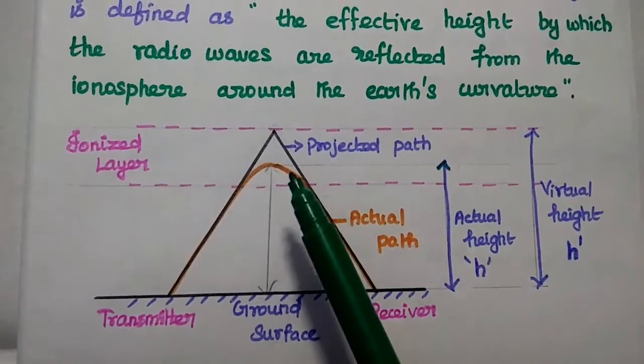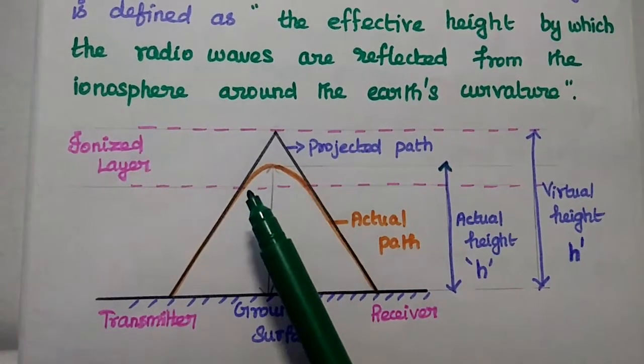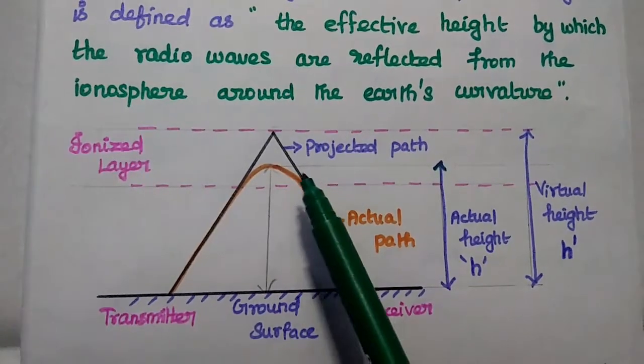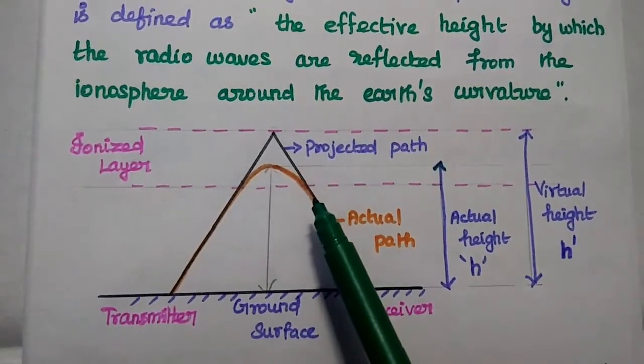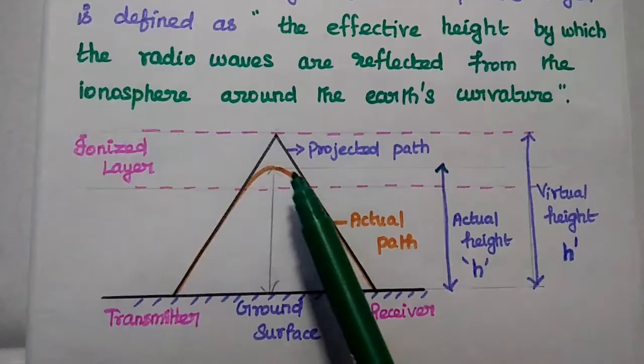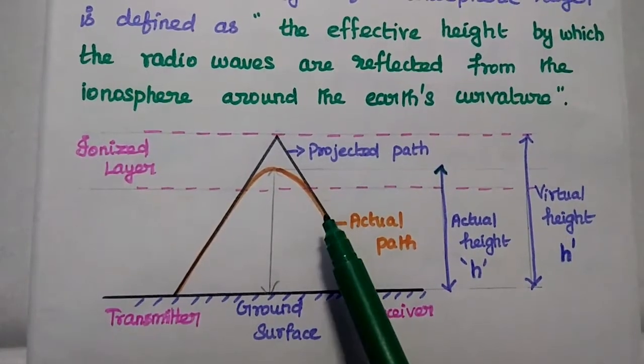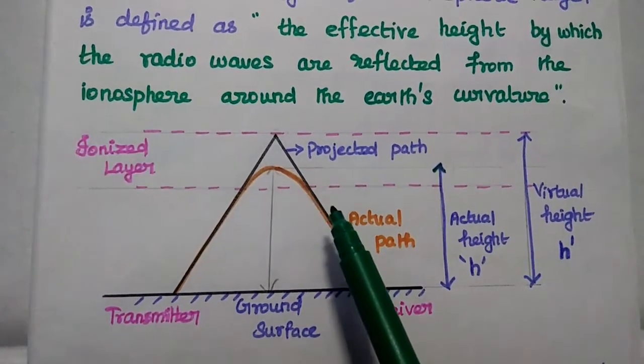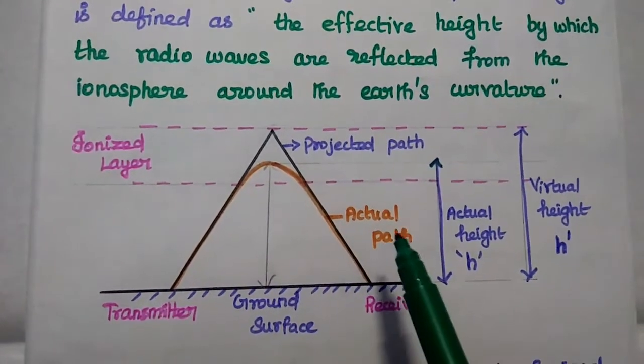When a wave enters the ionospheric layer, it gets refracted. When a wave is refracted, it takes the curve path. So here we can see that it is bent down gradually. There is no sharp bending. So it is bent down gradually, that is called as actual path.